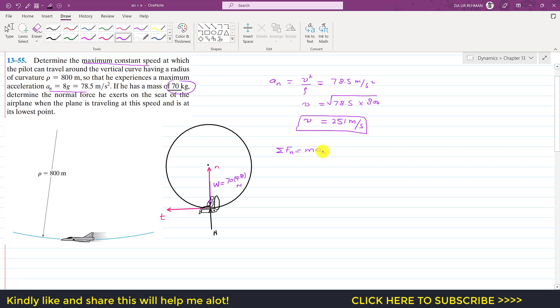So as we can see that this N is acting in the positive normal direction, so I will write N minus the weight which is 70 into 9.81 and this will be equal to the mass of the pilot which is 70 and a_n.